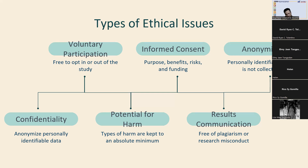The third type is anonymity — you don't know the identities of the participants, and personally identifiable data is not collected. We can only guarantee anonymity by not collecting any personally identifying information, such as names, phone numbers, email addresses, physical characteristics, or photos. However, in many cases it may be impossible to truly anonymize data collection — for example, data collected by phone cannot be considered fully anonymous because some personal identifiers like phone numbers are impossible to hide.